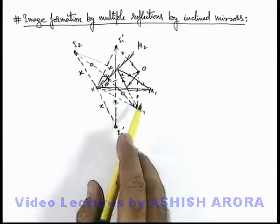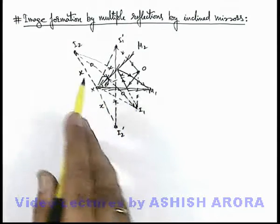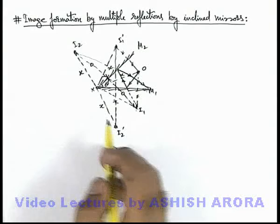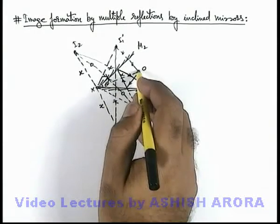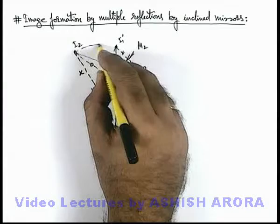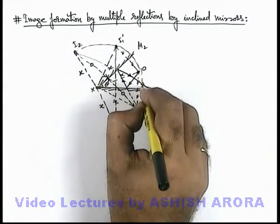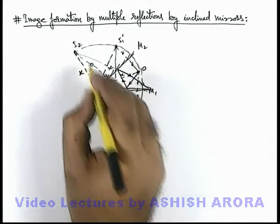So here we can see there are multiple images obtained. It will not stop at two images; there can be further image formation, but here we can see that all these images along with object lie on a circle of radius x with center at point of intersection.